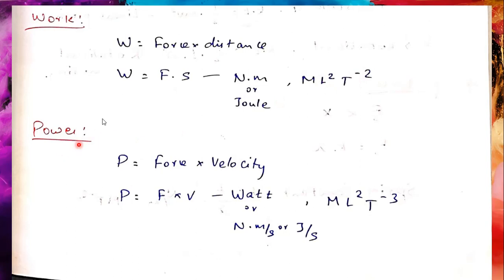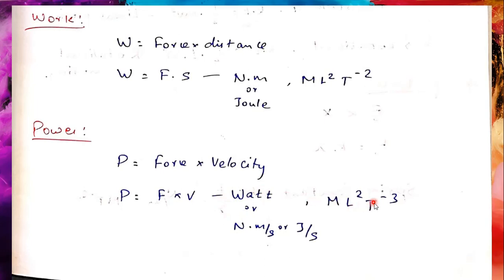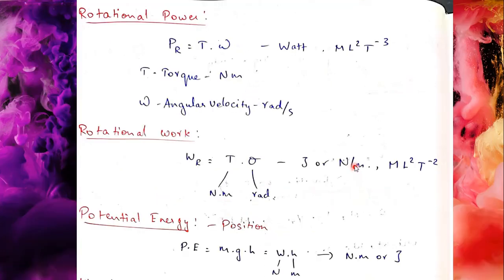Next one is power. Power is work done divided by time, or equivalently force into velocity, that is force into distance divided by time. The unit of power is watt — newton⋅meter per second, or joule per second. The dimensional formula is ML²T⁻³.